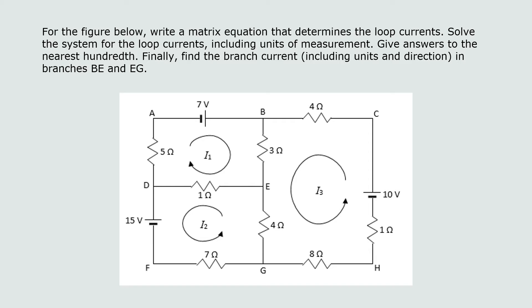Here's the example we're going to work through. For the figure shown, write a matrix equation that determines the loop currents. Solve the system for the loop currents including units of measurement, and give answers to the nearest hundredth — two decimal places. Finally, find the branch current including units and direction in branches BE and EG. This is really asking us to do three things.